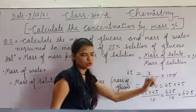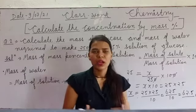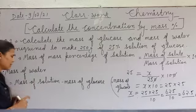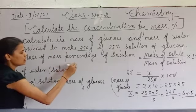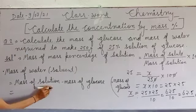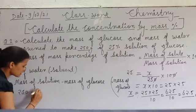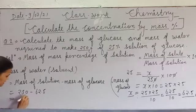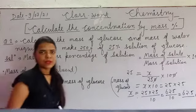Ab hame water yani ki solvent ka mass bhi find karna hai. Solvent ka mass find karne ke liye: kyunki hame solution ka bhi mass hai aur solute ka bhi mass hai, toh mass of water = mass of solution minus mass of solute yani ki glucose. That is 250 minus 62.5, which gives us 187.5 gram. So water ka mass bhi find ho chuka hai — that is 187.5 gram.